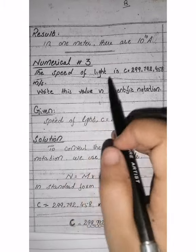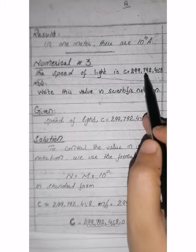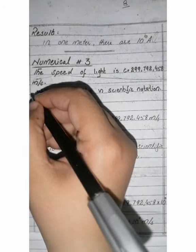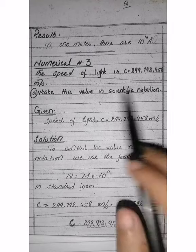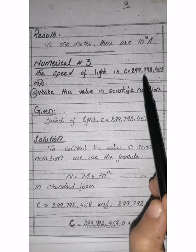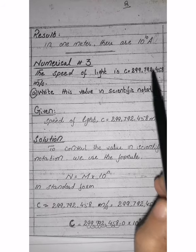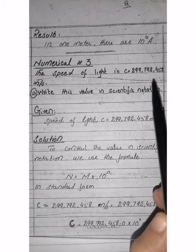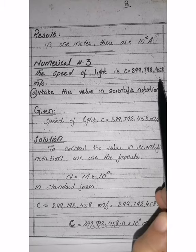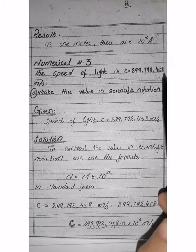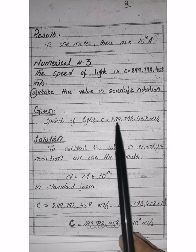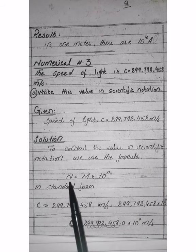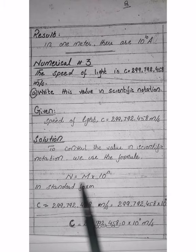Look at numerical number 3. The speed of light is 299,792,458 meters per second. This is your Part A: write this value in scientific notation. We have the topic of scientific notation, where we write larger or smaller values in compact form with powers of 10. Given: speed of light c = 299,792,458 meters per second.